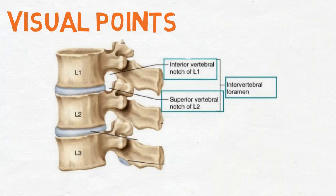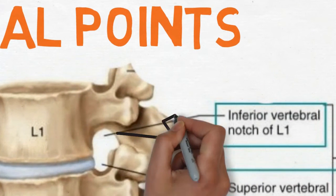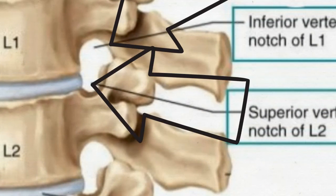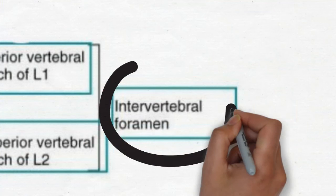This is the structure of three lumbar vertebrae joined together. As you can see these are the inferior and the superior vertebral notches and together they form the intervertebral foramen.